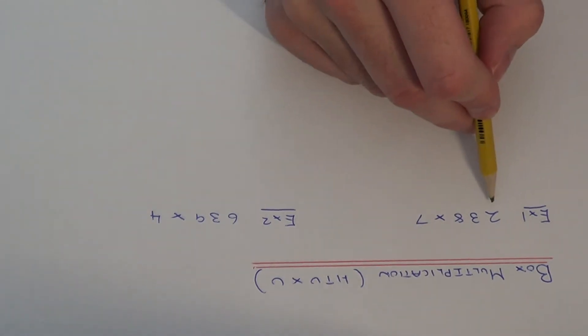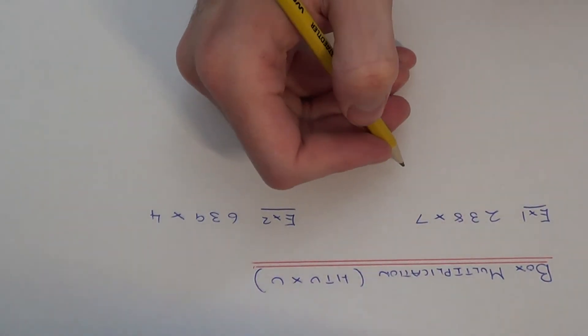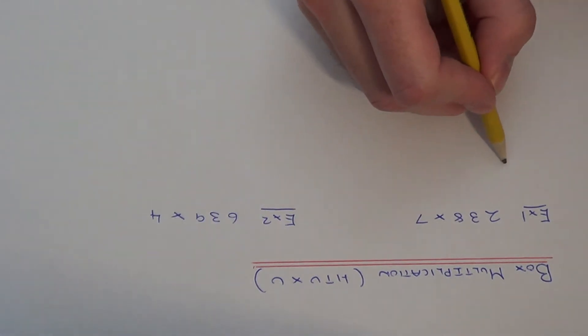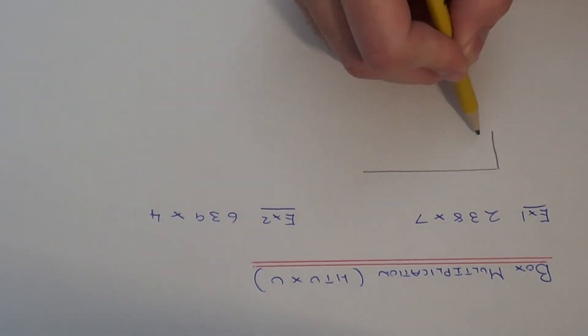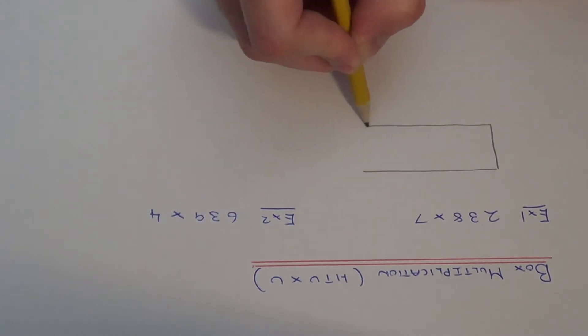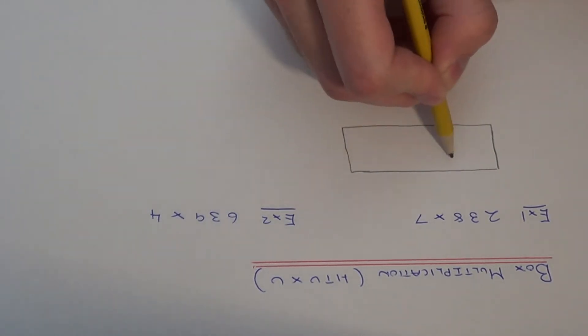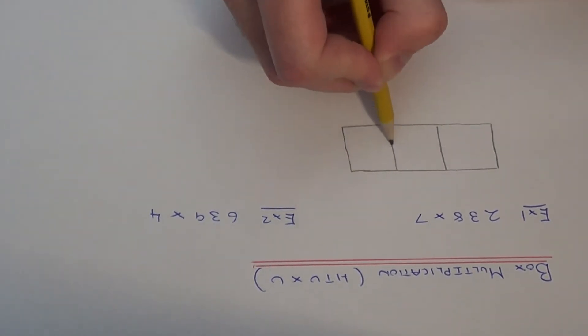So in our first example we've got 238 times 7. If we draw a rectangle and divide the rectangle up into three boxes because we have a three digit number.